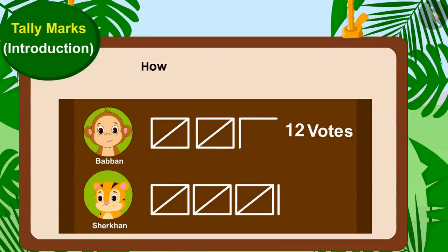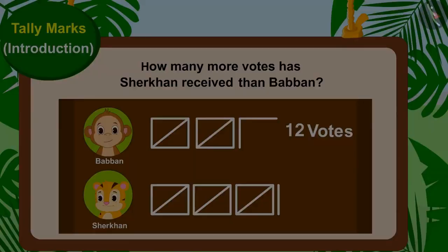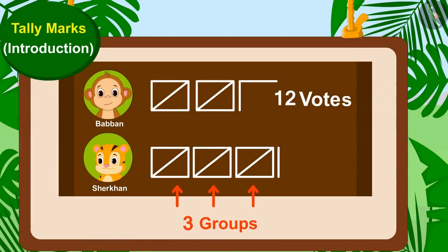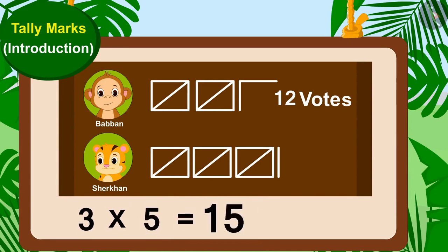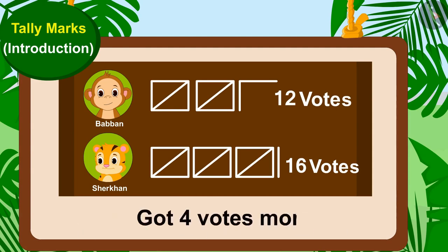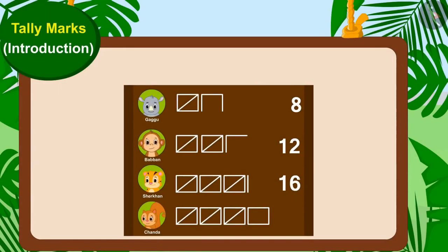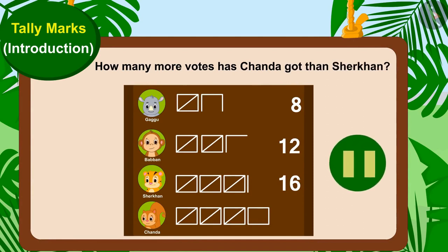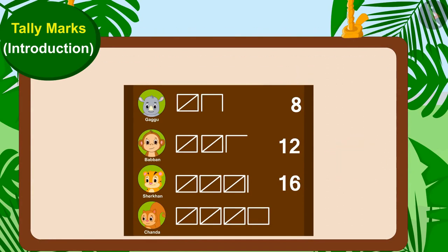Can you tell how many more votes Shere Khan received than Babban? Shere Khan's votes consist of three groups of tally marks and one line. Shere Khan has got three times five — fifteen — plus one — sixteen votes. And Babban has got 12 votes. This means Shere Khan has got four votes more than Babban. Now, can you tell how many more votes Chanda got than Shere Khan? Chanda has received 19 votes and Shere Khan has got 16 votes. This means Chanda got three more votes than Shere Khan.